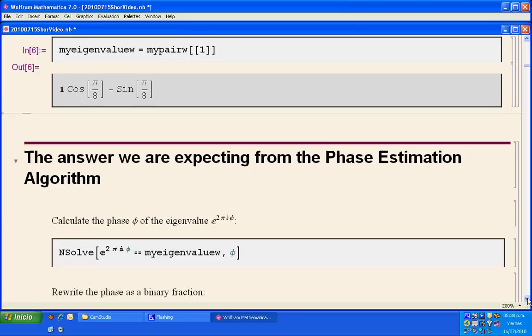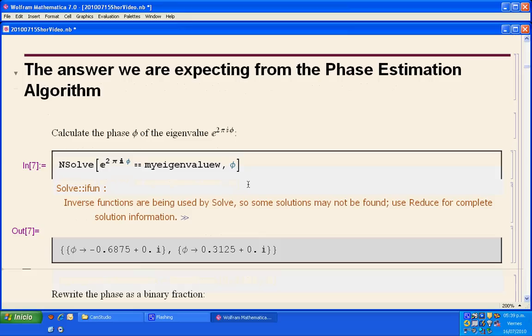Now, the kind of answer that we expect from the phase estimation algorithm is the phase of an eigenvalue. In this case, with the command NSolve, we can get the phase of our eigenvalue. The phase is 0.3125, and here we have plus zero times an imaginary part.